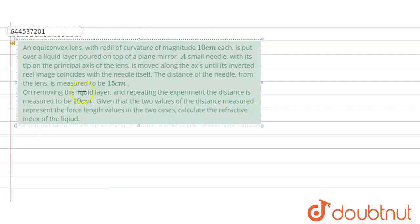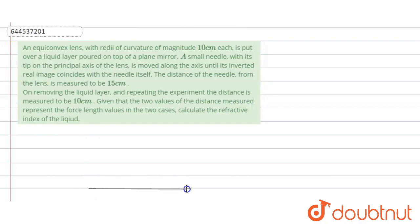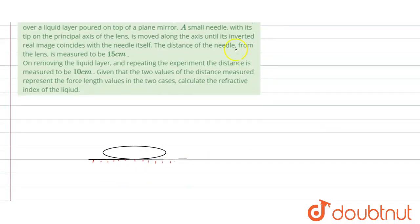Now we first represent our situation. Let's say this is our mirror. Now on this mirror we have placed our convex lens. We have also poured liquid, so here it would be the liquid which we have poured.